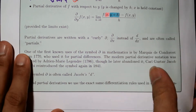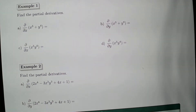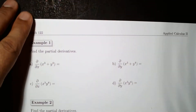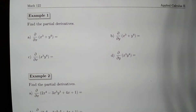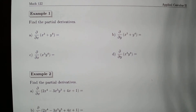We are not going to do partial derivatives using the limit definition — this is just to show where it's coming from and its analogous form from Calc 1. Otherwise it would be a very painful process. We're going to use the exact same differentiation rules from Calc 1: the general power rule, product rule, quotient rule, chain rule, etc.